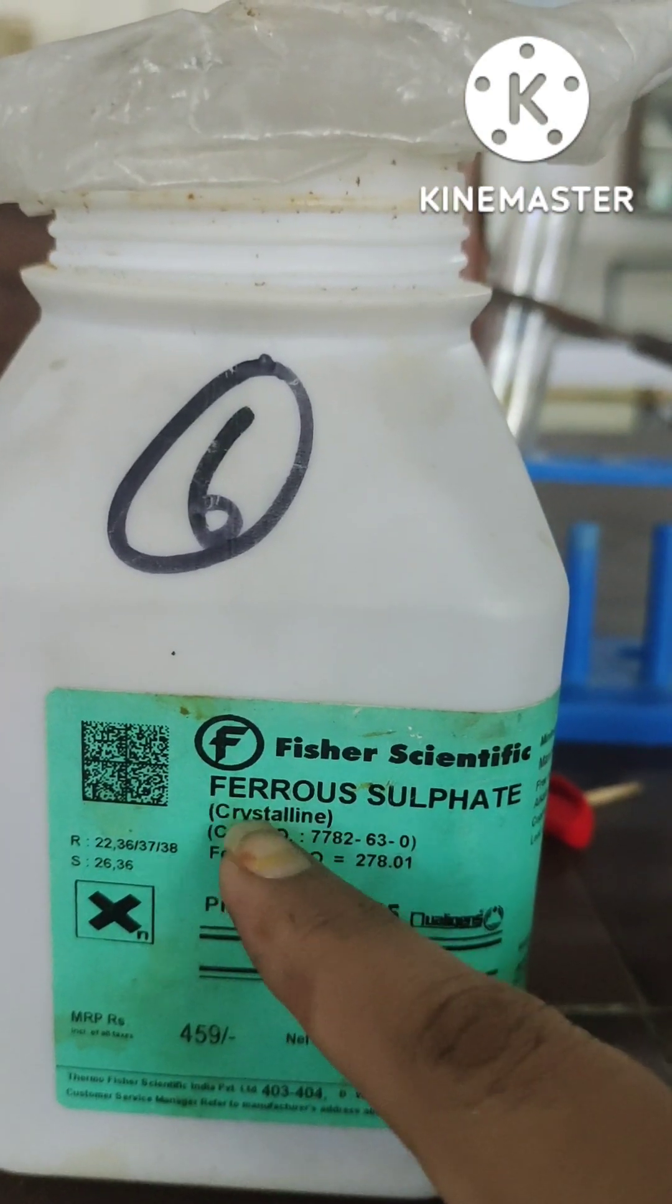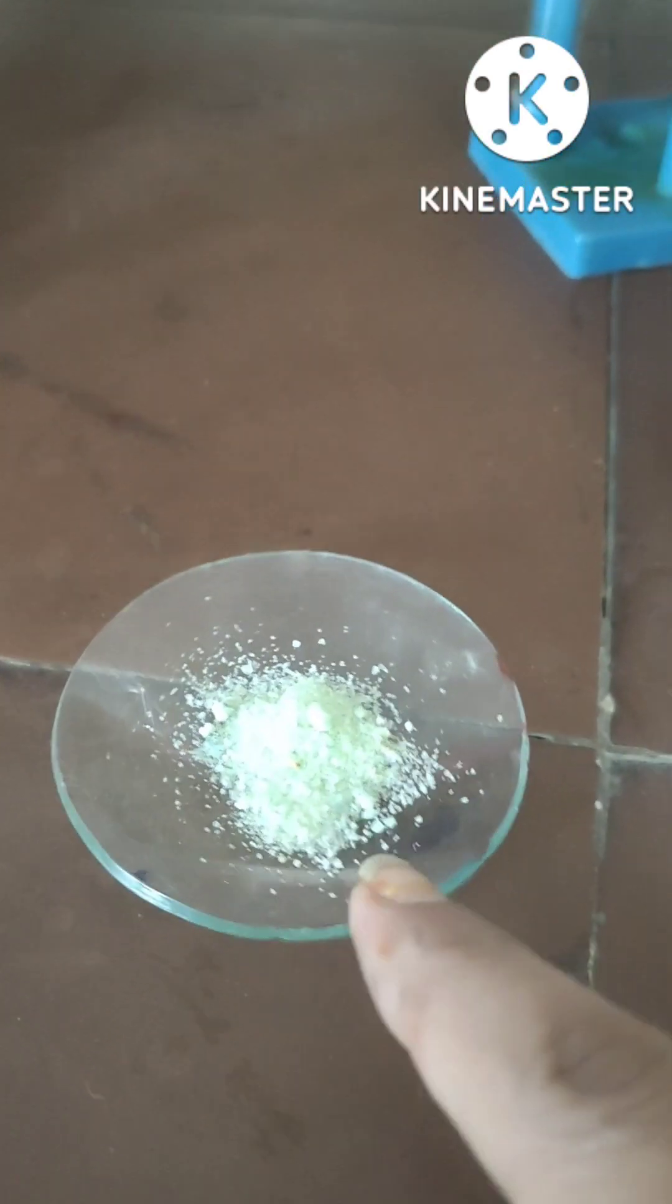Hello everyone, today we are going to see one more chemical, and that is ferrous sulfate. It is pale green in color.